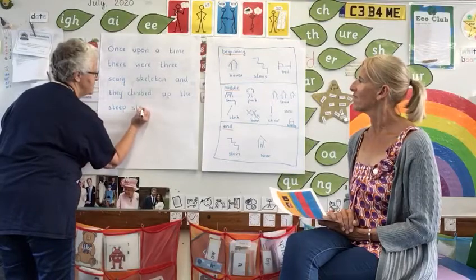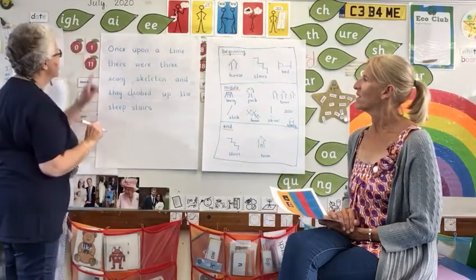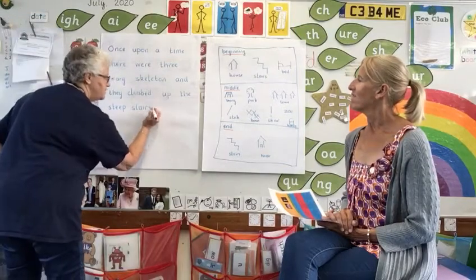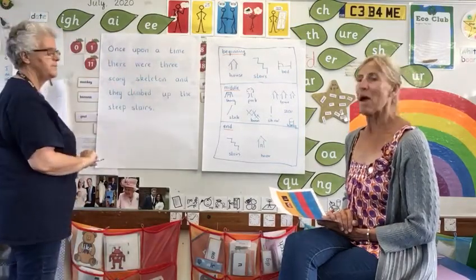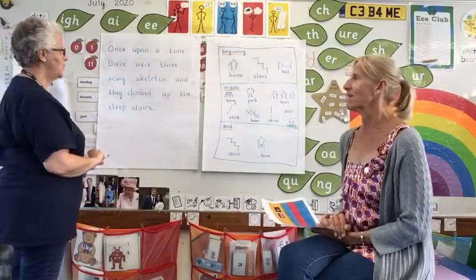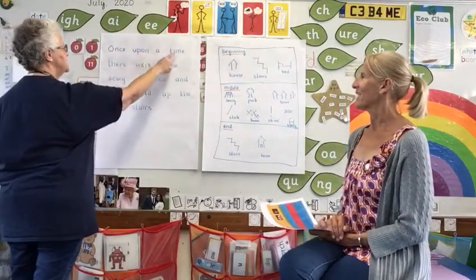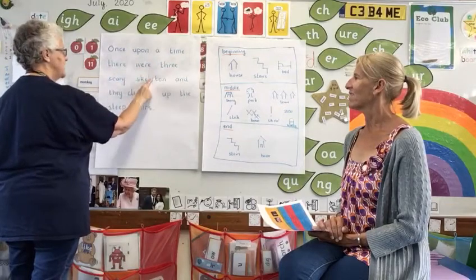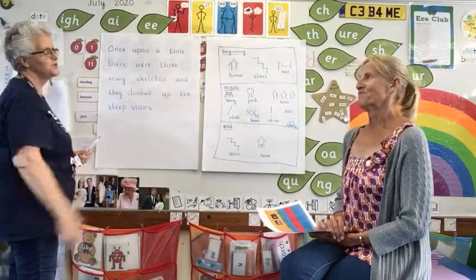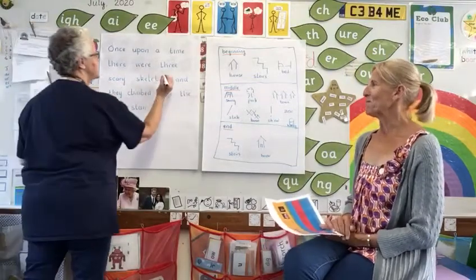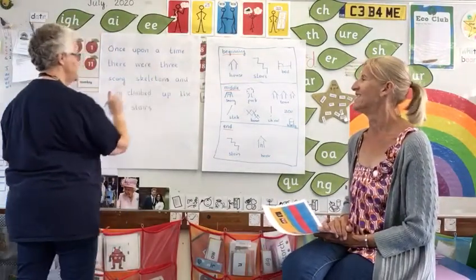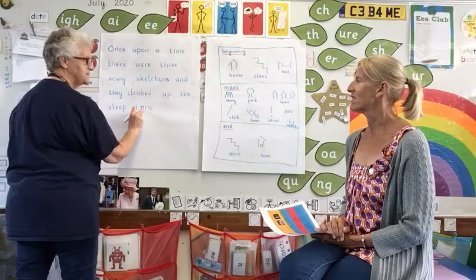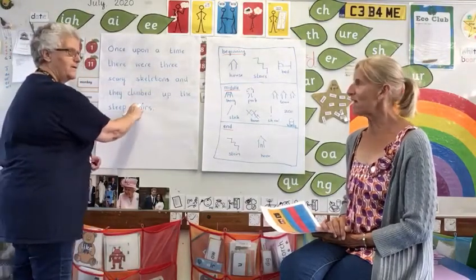And I know now I must check it. Capital letters. I've got the finger spaces. Full stop. Now if you read that back, I've noticed a mistake. Once upon a time, there were three scary skeleton. Good job we checked it. Missed the S off — skeletons. And they climbed up the steep stairs. Well done. That's a really good sentence.